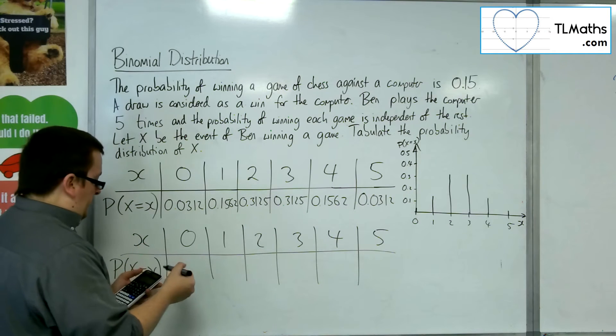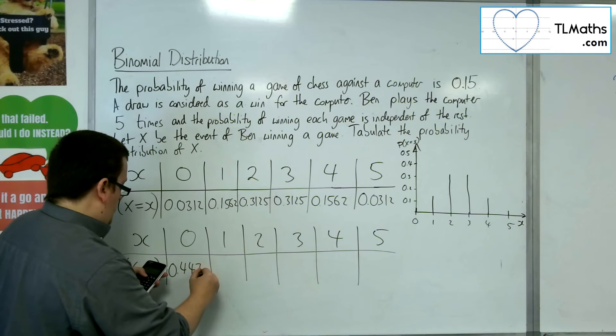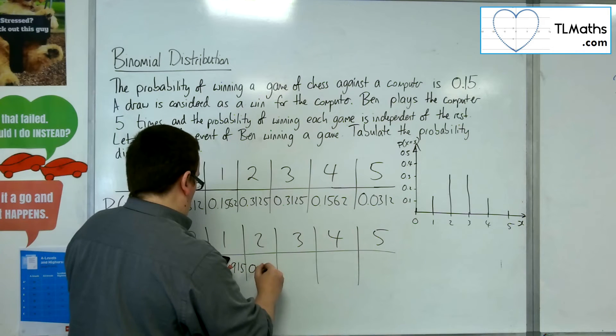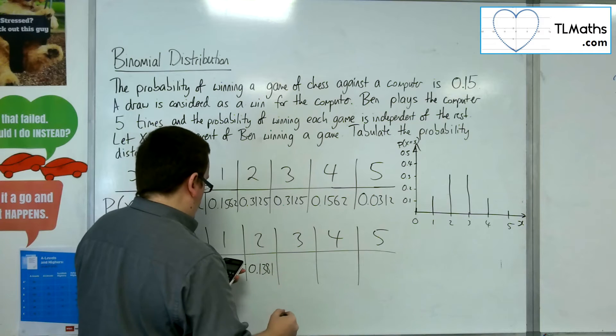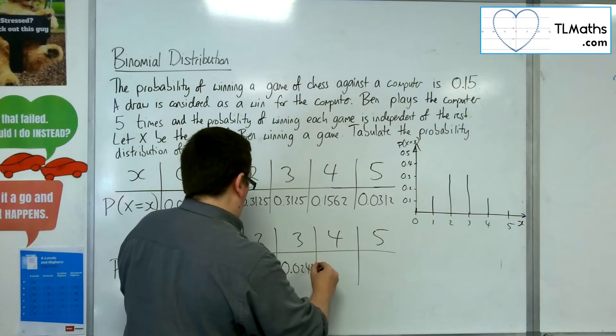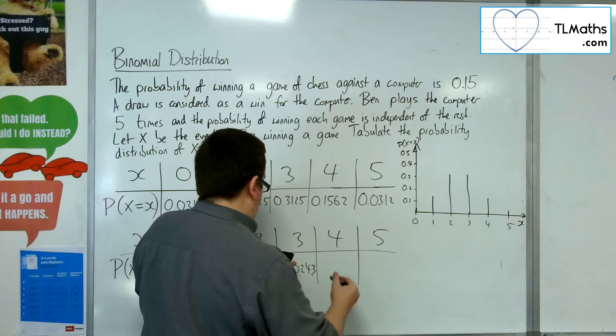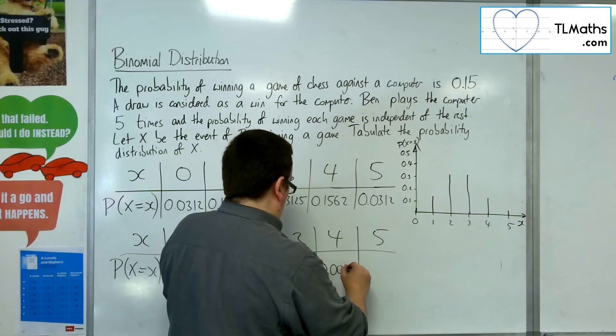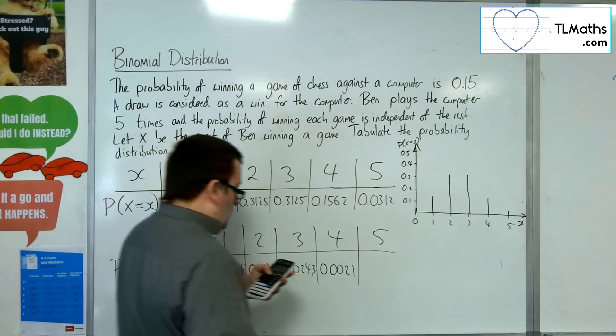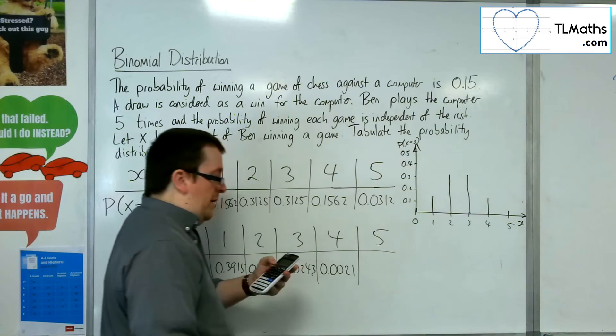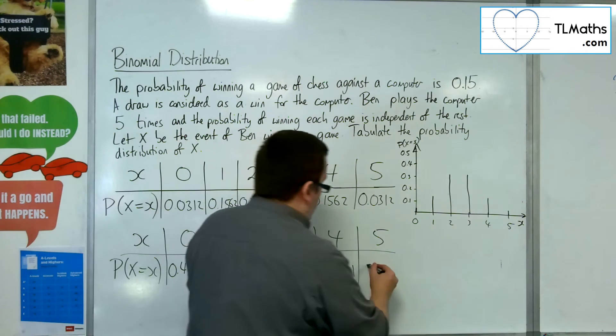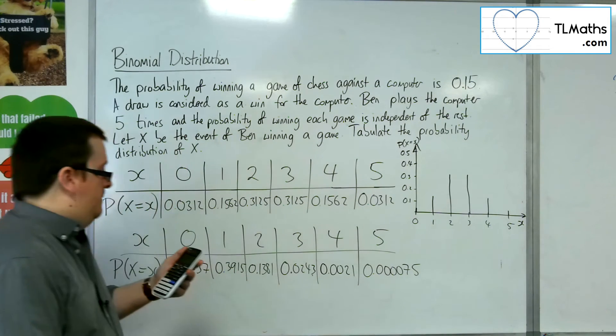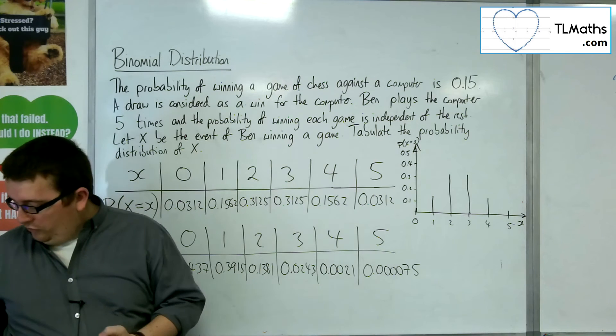So we get 0.4437, 0.3915, 0.1381, 0.0243. Then we get 2.1 times 10 to the minus 3, so 0.0021, and then 7.5 times 10 to the power of minus 5, so 0.000075. So this is now the distribution.